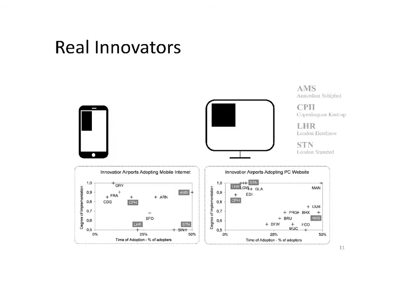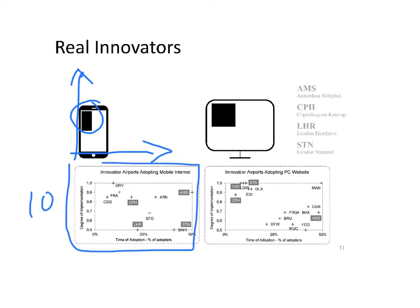Innovator airports were the ones who adopted early the innovation with a high degree of implementation, represented with this square. And 10 airports are identified under this category. But for real innovators, it was necessary not only to be innovators adopting mobile applications, but also when they adopted the PC website.